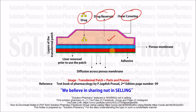The first layer beneath the drug reservoir is called the porous membrane — a membrane which has pores. These pores allow the movement or release of drug from the drug reservoir towards the skin side.